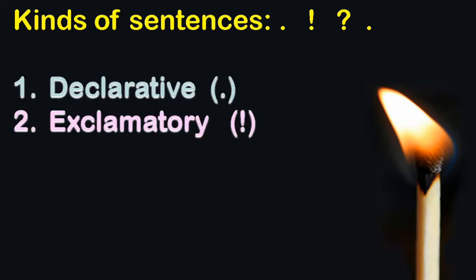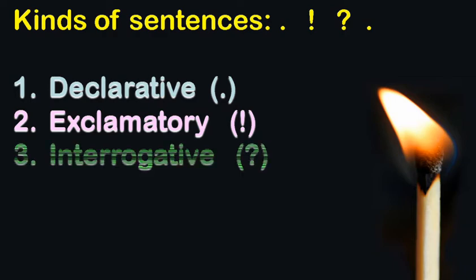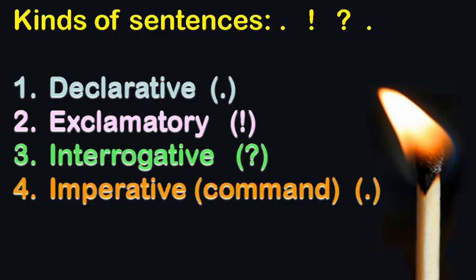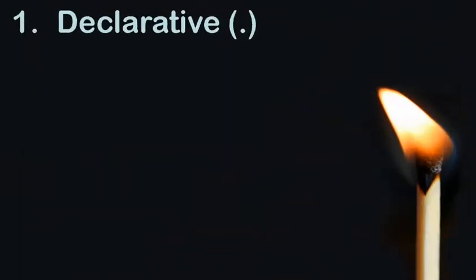There are four types of sentences: declarative, exclamatory, interrogative, and imperative. 'Command' is imperative's nickname. Now let us identify the first kind, which is declarative.